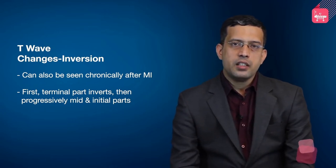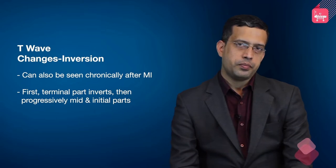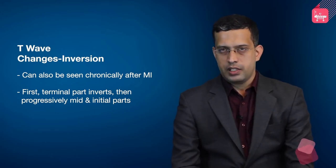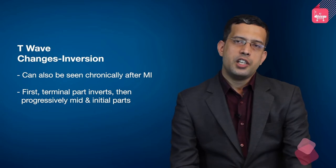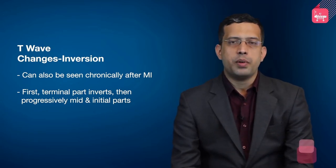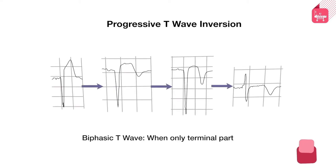There is generally a progression to T wave inversion. Initially the terminal part of the T wave inverts, then the change progressively extends to the mid and initial parts. In between, you can have a picture where the initial part of the T wave is upright and the terminal part is inverted — this is called a biphasic T wave.